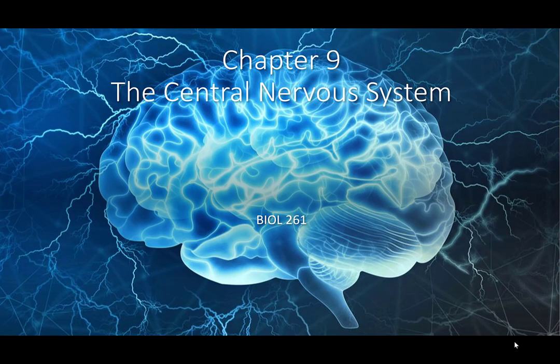This PowerPoint is over Chapter 9. It covers the central nervous system and corresponds with your Chapter 9 study guide. A lot of the topics discussed in this chapter are going to be superficially covered. Please refer to the study guide to see which concepts I expect you to know. Most of the test questions are going to be anatomical vocabulary.